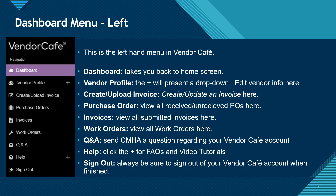The next three buttons are Purchase Orders, Invoices, and Work Orders. These buttons will all be discussed further in other CMHA Vendor Cafe training videos. The Q&A button allows you to send a question directly to CMHA. We would prefer if you would direct your questions to procurement at cintimha.com.